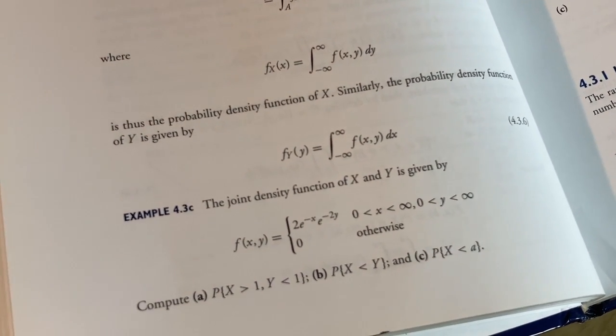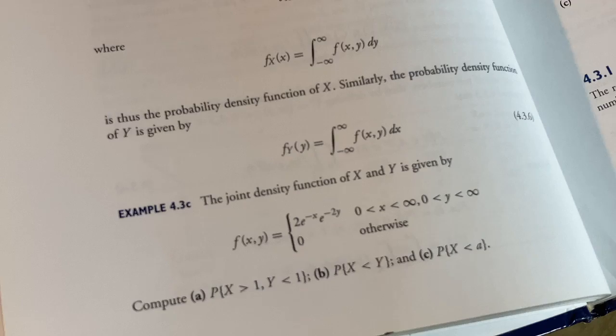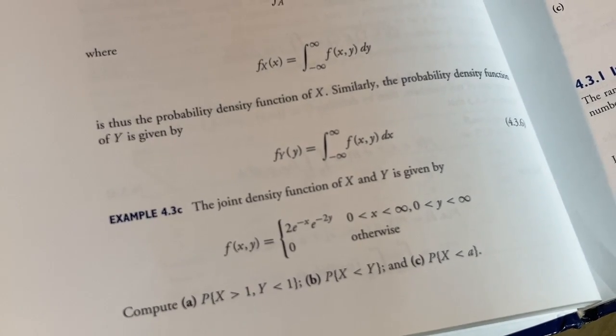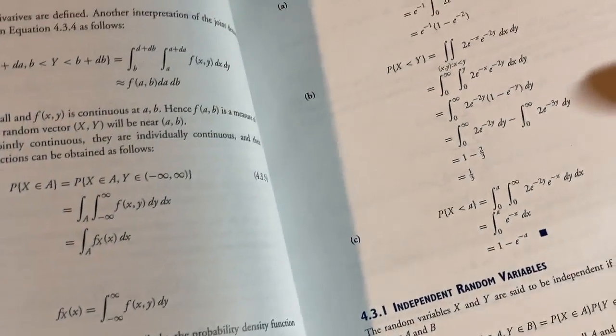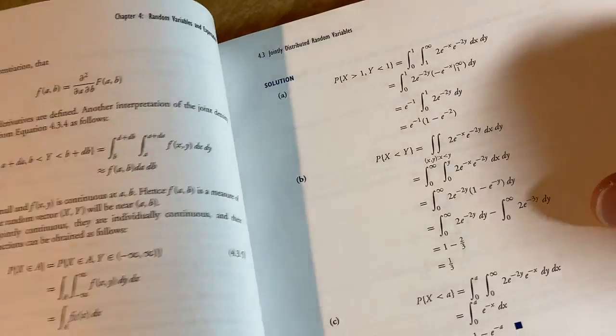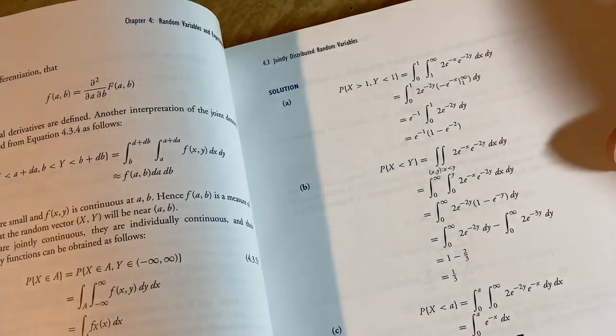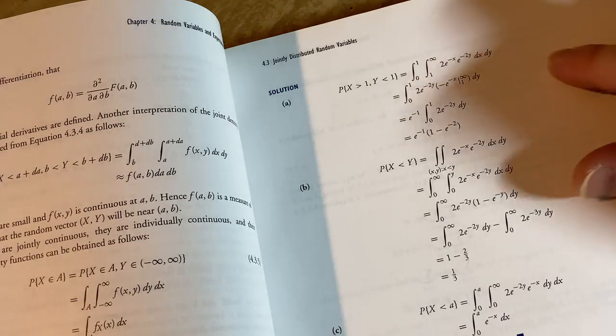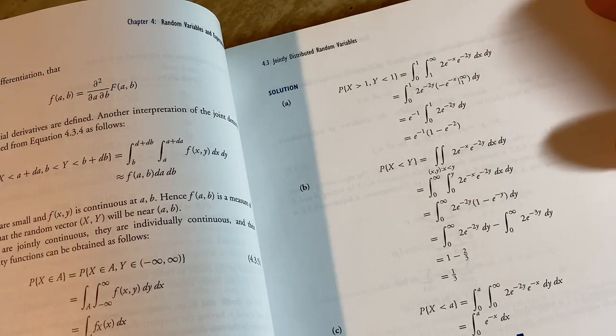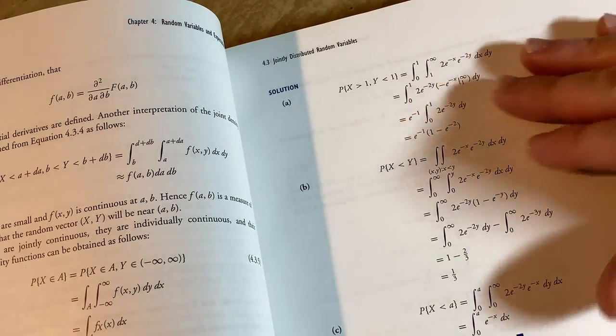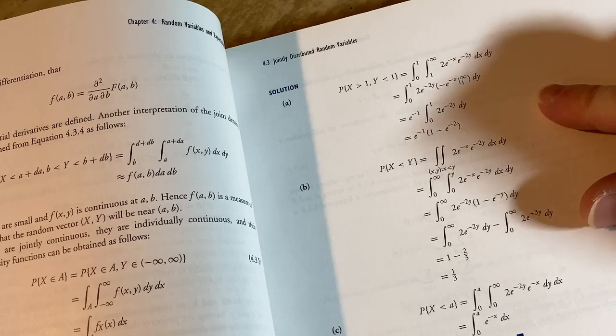And they have you compute some probabilities. You see the probabilities are asking you to compute a, b, and c. And so here it goes through the solution. And it computes those probabilities using the joint density function of x and y. So it does it all by hand. Does it all by hand.